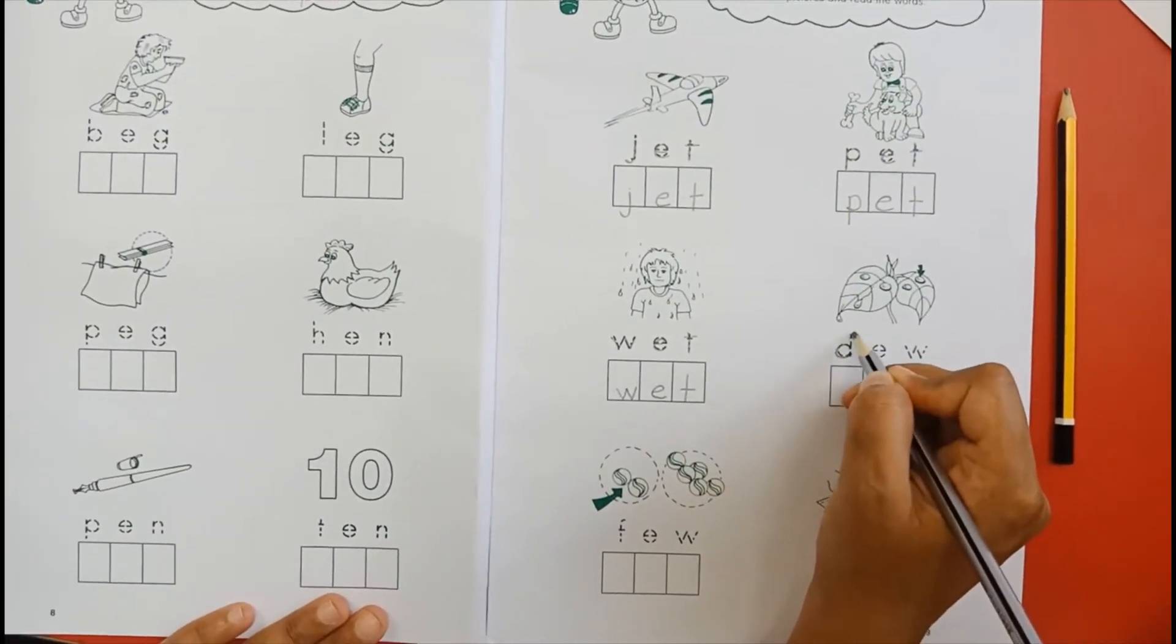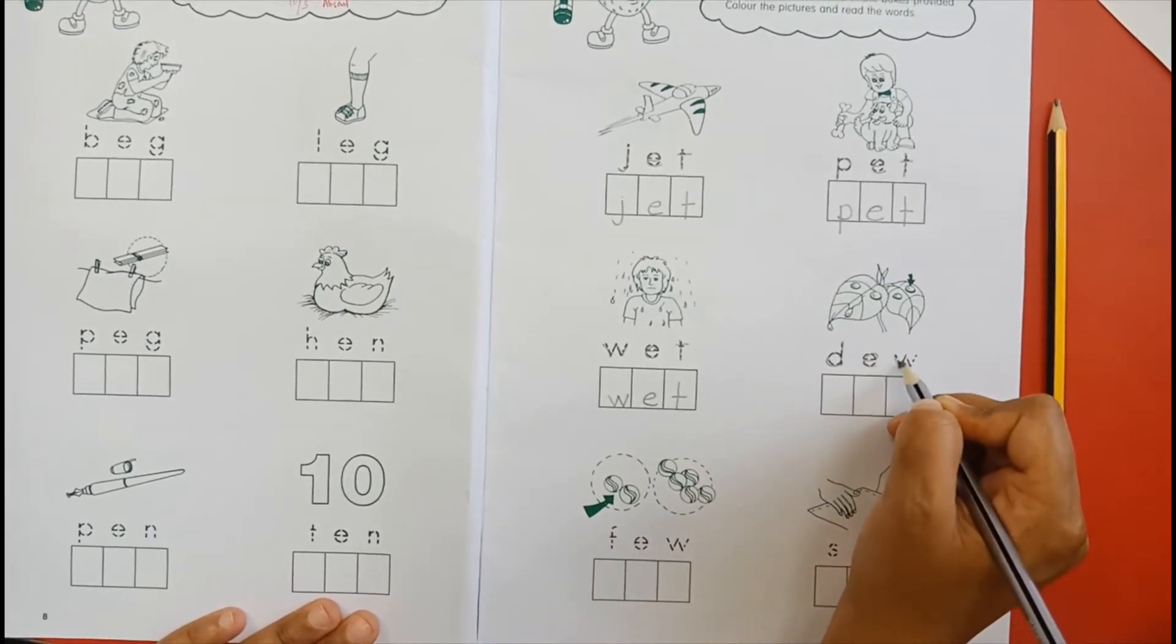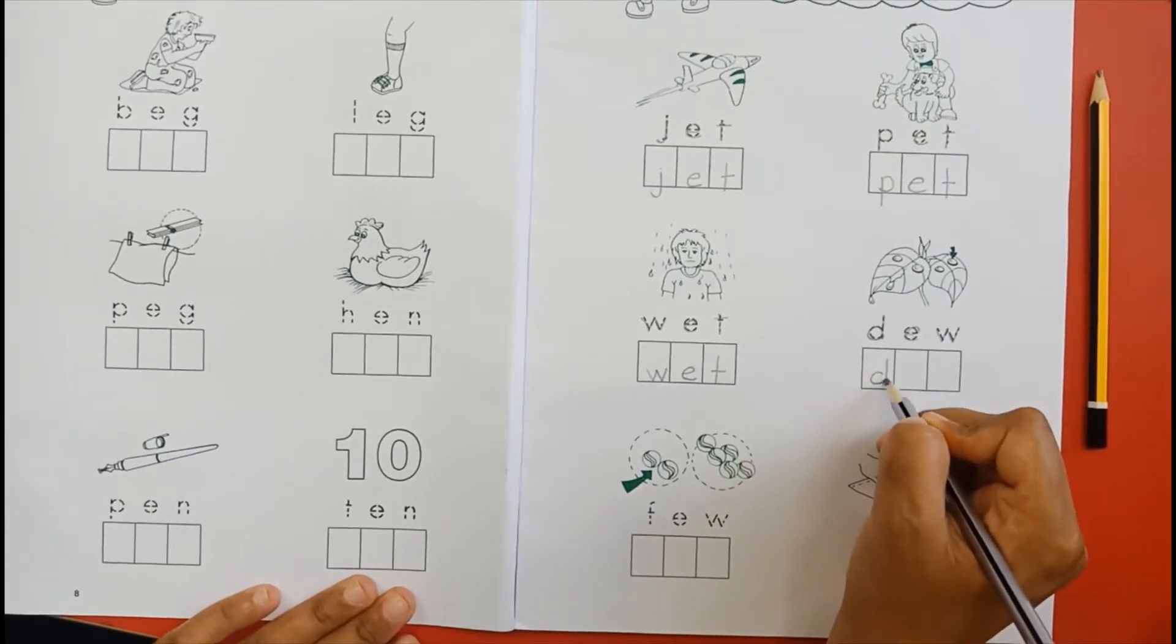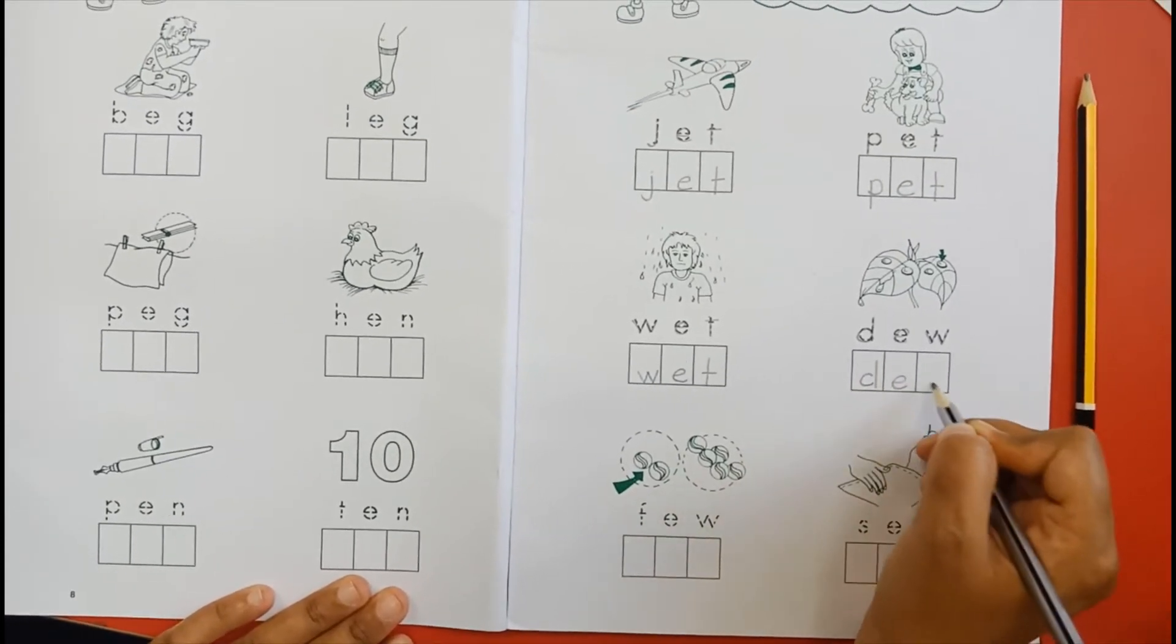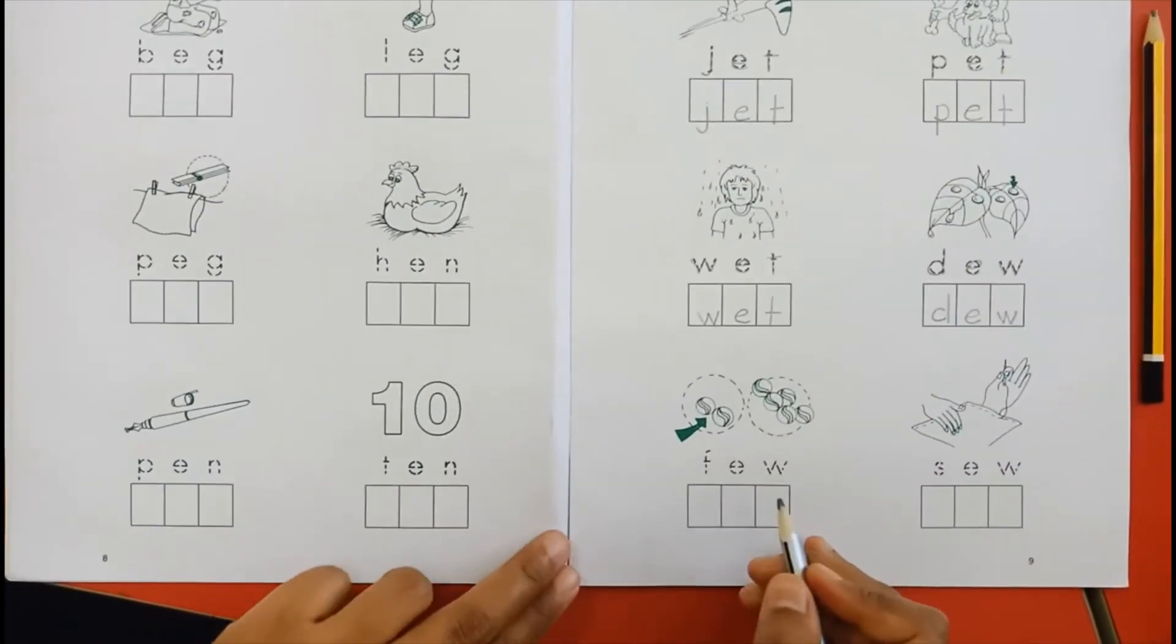D-E-W. Dew. The next one is few. F-E-W. Few. Again one more time.